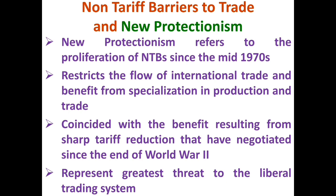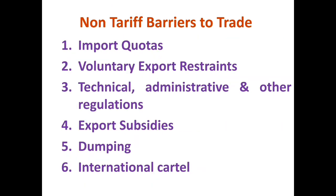It is also called the new protectionism, referring to the proliferation of NTBs since the 1970s. Most often NTBs are used as a disguised method to obstruct international trade because they can be used without proper notice from trading partners. The various types of non-tariff barriers include import quotas, voluntary export restraints, technical, administrative and other regulations, export subsidies, dumping, as well as international cartels. Most NTBs took an administrative measure form, trying to discriminate against foreign commodities in favor of domestically produced goods.